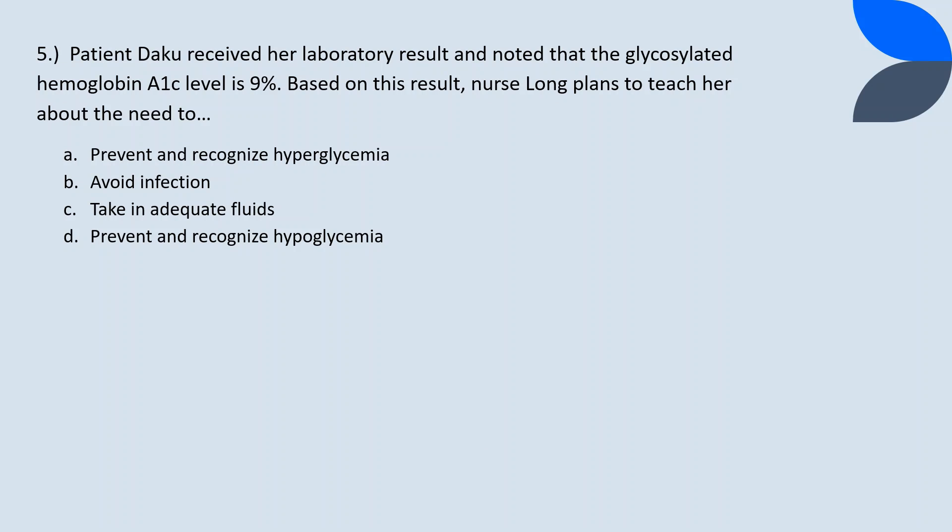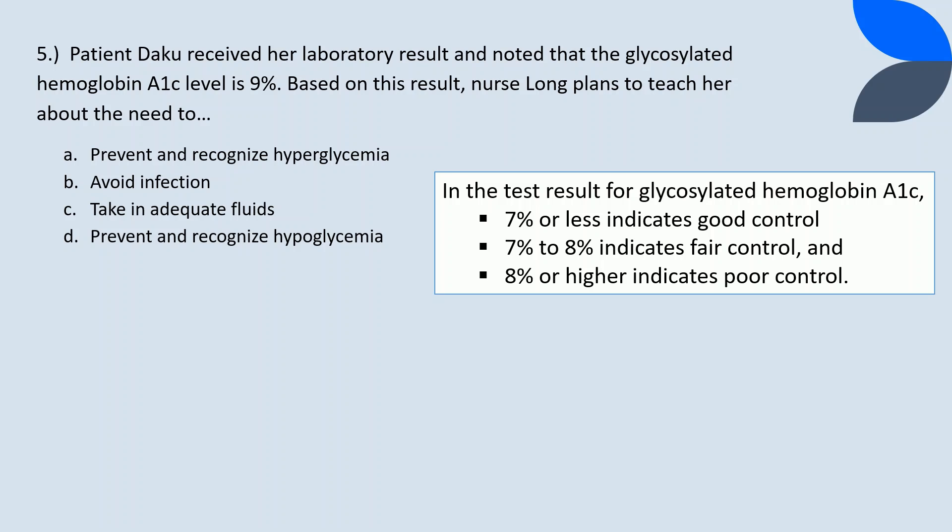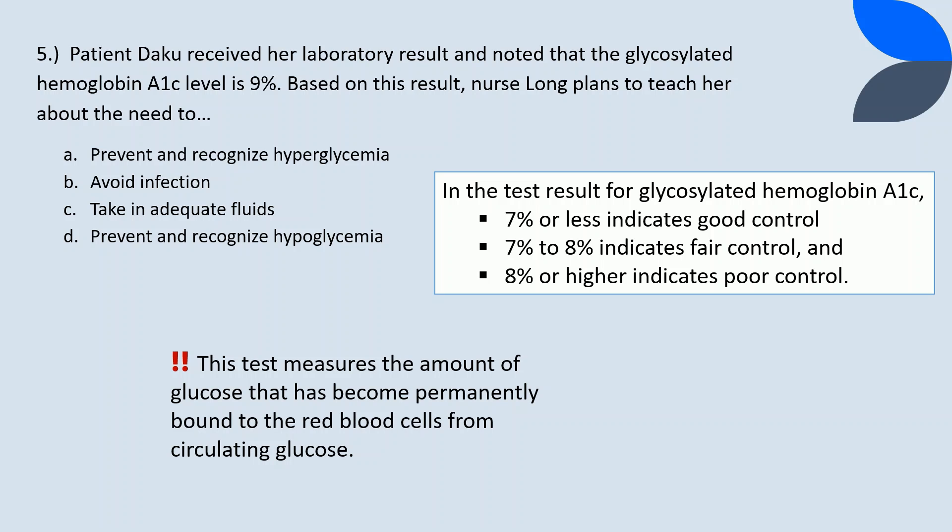Question 5. Patient Dacour received her lab result and noted that the glycosylated hemoglobin A1c level is 9%. Based on this result, Nurse Long plans to teach her about the need. In the test result for glycosylated hemoglobin A1c, 7% or less indicates good control, 7% to 8% indicates fair control, and 8% or higher indicates poor control. This test measures the amount of glucose that has become permanently bound to the RBC from circulating glucose. Elevations in the blood glucose level will cause elevations in the amount of glycosylation, indicating the continued need for teaching related to the prevention of hyperglycemic episodes. Therefore, the correct answer is A: prevent and recognize hyperglycemia.